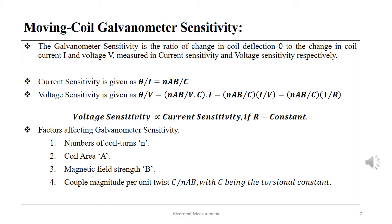Thus we see that voltage sensitivity is proportional to current sensitivity if the value of R is constant. The factors that affect galvanometer sensitivity are the number of coil turns N, coil area A, magnetic field strength B, and the torsional constant C — given as C/(NAB), where C is the torsional or spring constant.